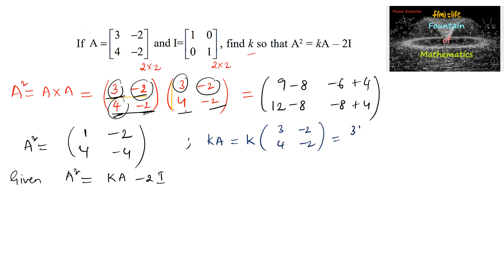This K is a constant scalar multiplying to each and every element of the matrix elements. So 3K, minus 2K, 4K, and minus 2K.